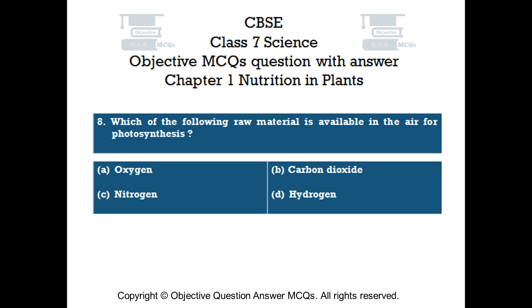Question number 8. Which of the following raw materials is available in the air for photosynthesis? Option A: oxygen. Option B: carbon dioxide. Option C: nitrogen. Option D: hydrogen.